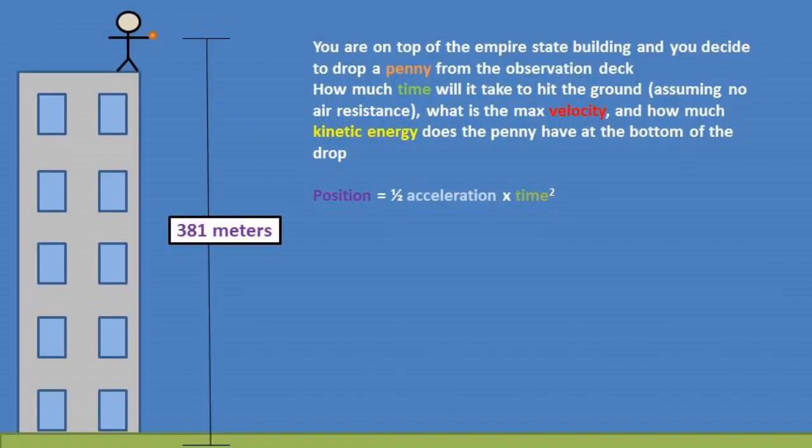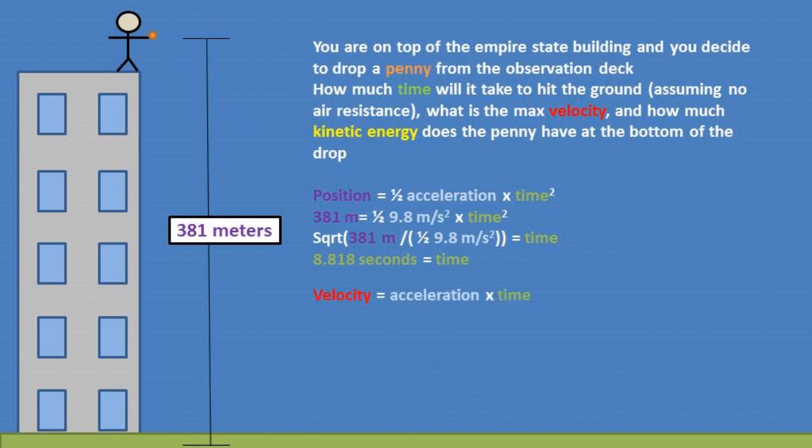Now let's solve for time. We can use the position formula of 1/2 acceleration times time to the second power equals position. We are leaving velocity out of the formula due to the starting velocity being zero. After plugging in our numbers and rearranging the formula, we get time for the penny to fall to equal 8.818 seconds.